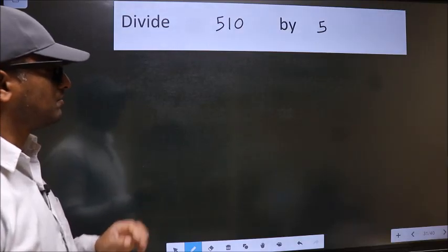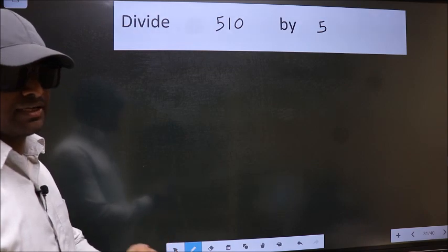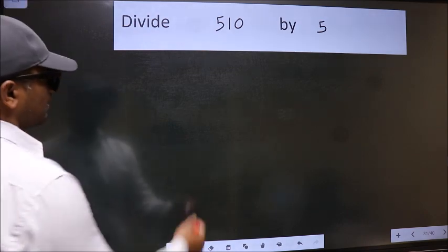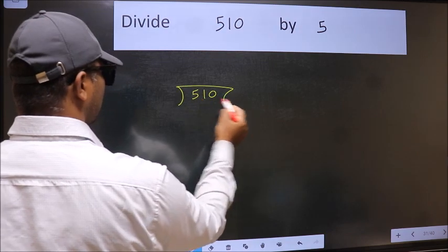Divide 510 by 5. To do this division, we should frame it in this way. 510 here and 5 here.